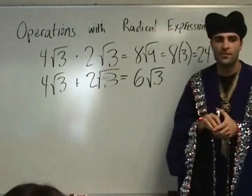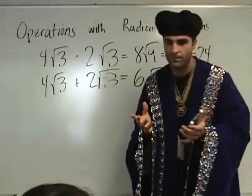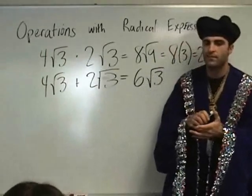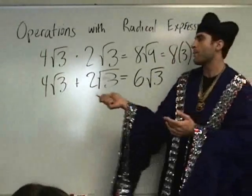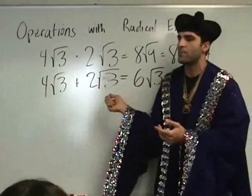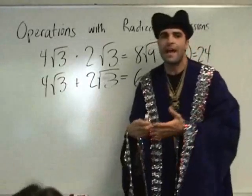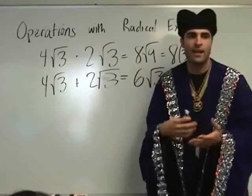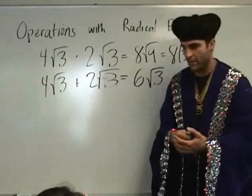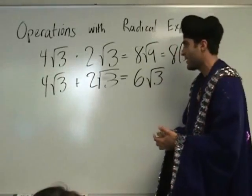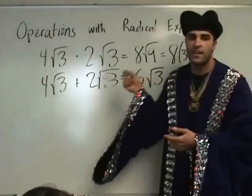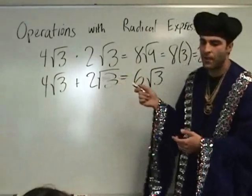When you group things, you don't change them. Grouping four apples plus two apples, you have six apples — it's not apples squared or apples cubed or anything. These are the basic rules. Understand these rules.